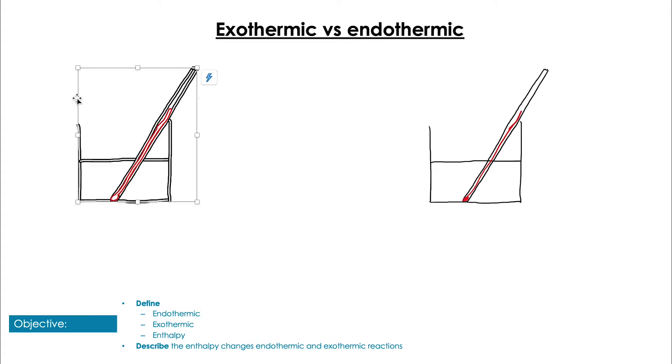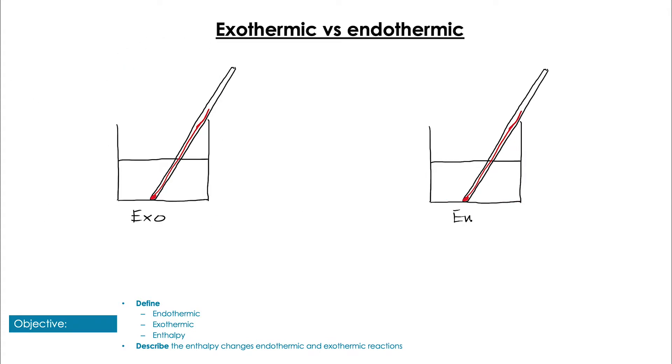So let's compare endothermic and exothermic reactions side by side. In exothermic reactions we have reactions that are going to feel usually hot to the touch because they're going to be giving out energy to their surroundings. Conversely we have endothermic reactions which take in energy from the surroundings and are going to feel usually cool to the touch.